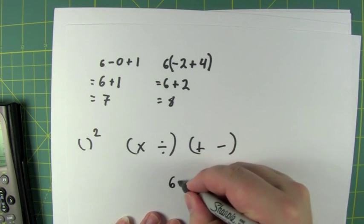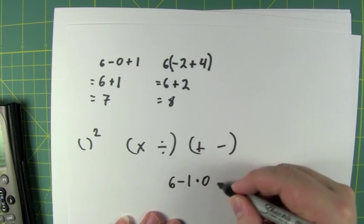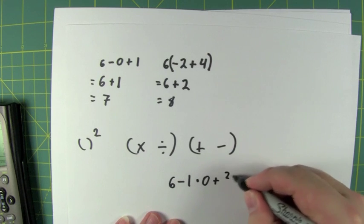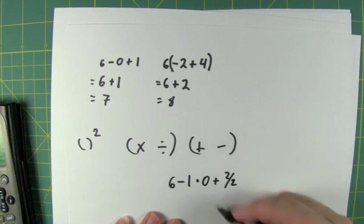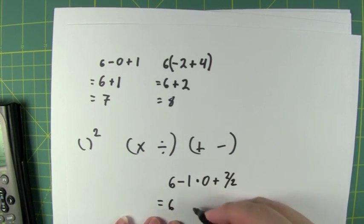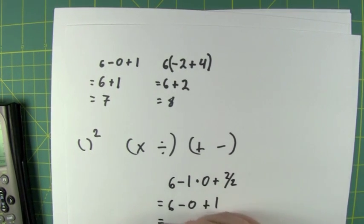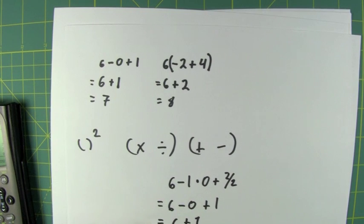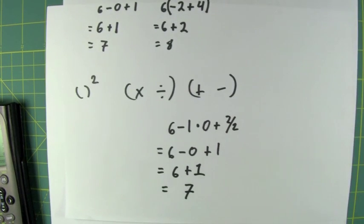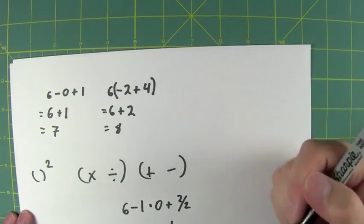I hope that helped. So for the record: six minus one times zero plus two over two is equal to six minus zero plus one, which is equal to six plus one, which equals seven. Anyway, that's how you do it. Cheers, have a great day.